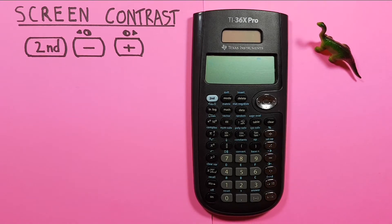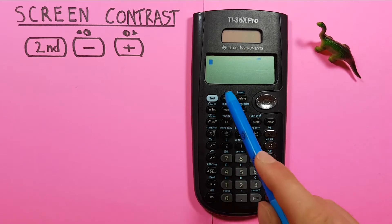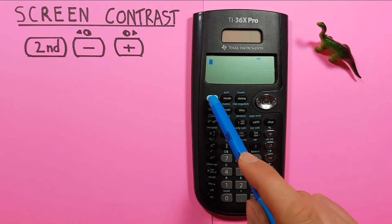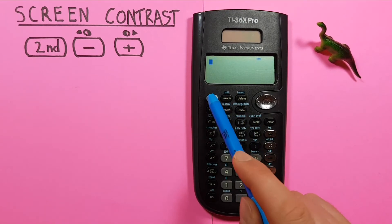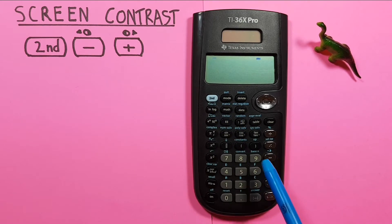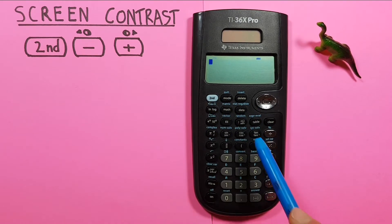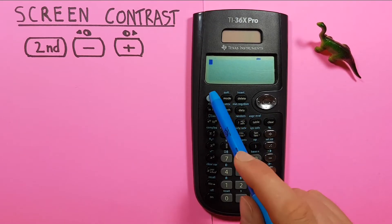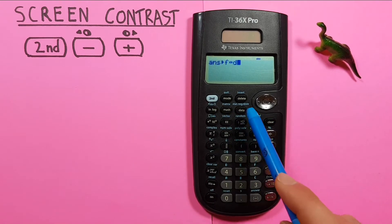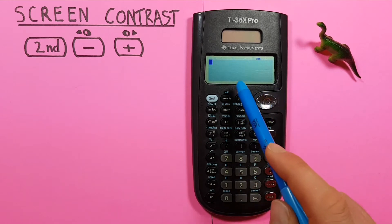To increase the contrast you would use the addition key, or the plus key. So you press second, plus, and keep pressing those two, and you'll see the contrast on your screen increase. You should even see the background become darker.